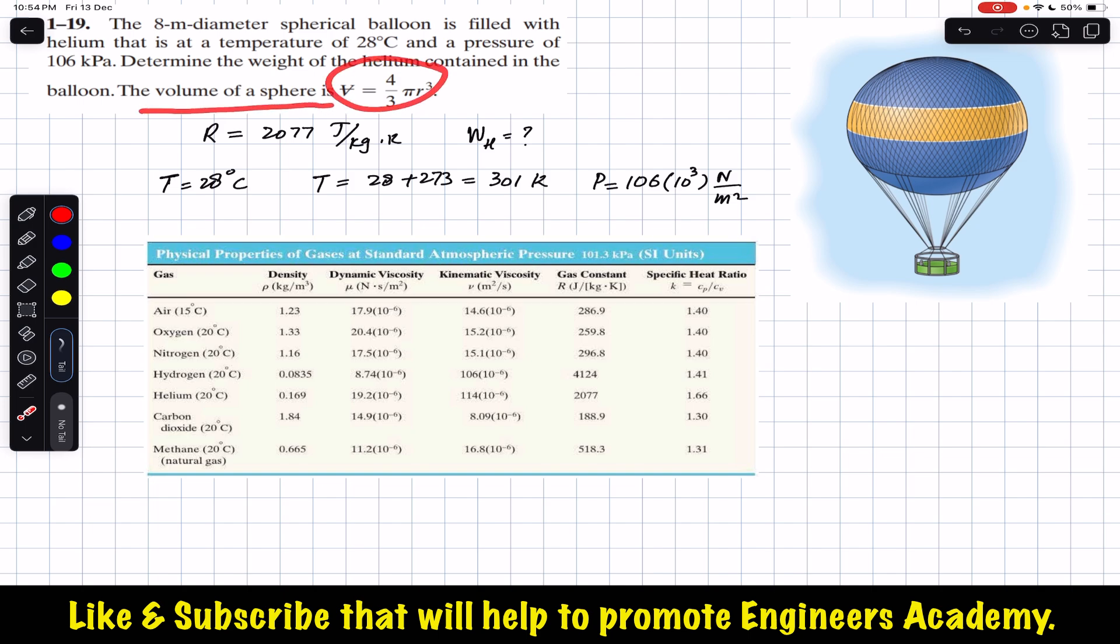Now using Appendix A from the book, the gas constant for helium is 2077 joules per kg Kelvin. So this is the gas constant for the helium.